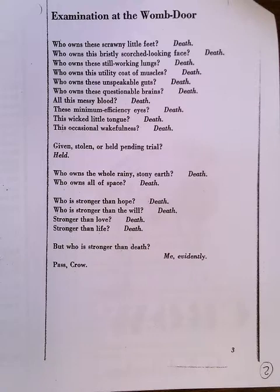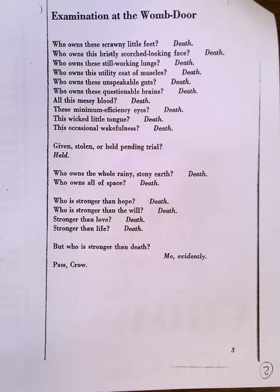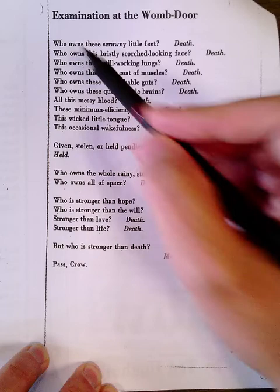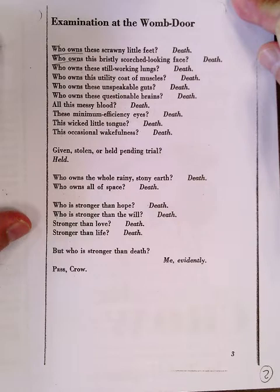The title is very informative. There is a kind of examination happening at the womb door. The womb door is, of course, the entrance into the world — your exit from the womb and your entrance into the world. So this is Crow. We notice that all these initial questions are about who owns, and it certainly seems like we're talking about Crow.